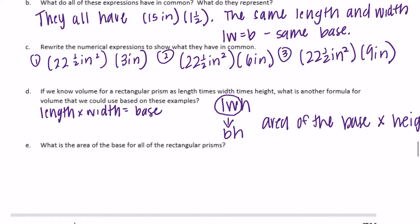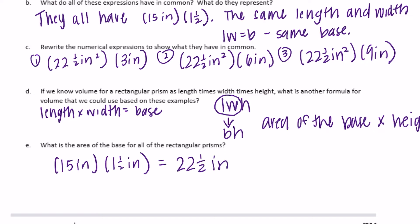What is the area of the base for all of the rectangular prisms? We already figured that out — it was fifteen inches by one and a half inches, which equals twenty-two and a half inches squared. So twenty-two and a half inches squared is the area of the base.